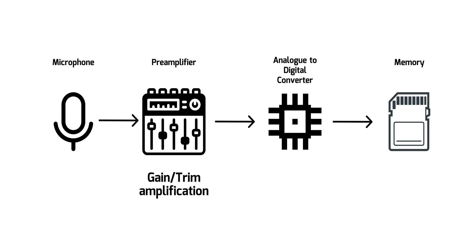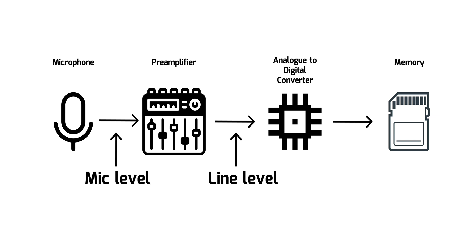Gain is what happens in a recorder's preamplifier. It takes a microphone signal, which is a very small signal, and amplifies it — makes it stronger — and takes it to a stronger level that we typically refer to as line level. Line level is really kind of a range, but the idea is that this line level is how most recorders are designed to handle and record audio. So no matter which recorder you're using, there is some level of amplification, some level of gain or trim that happens in the recorder somewhere.